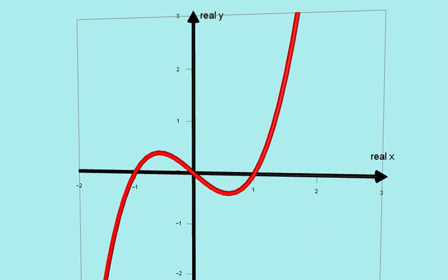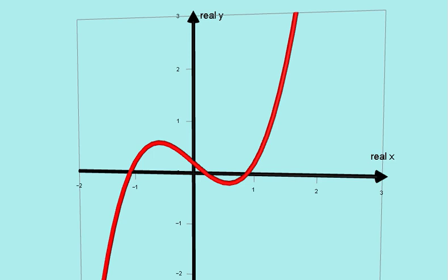If I move the graph up slightly, it still crosses the x-axis three times, here, here, and here. So the solutions of the equation y equals 0 are those three values.